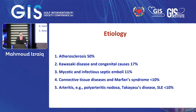Regarding etiology: atherosclerosis accounts for 50% of cases. Kawasaki disease and congenital causes account for 17%. Mycotic and infectious septic emboli account for 11%. Connective tissue disease and Marfan syndrome account for less than 10%. Arthritis, polyarthritis, Takayasu, Behcet's, and SLE also account for less than 10% of cases.